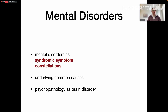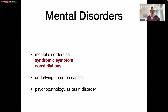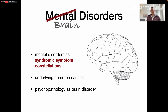What are mental disorders? The standard view in medicine is that mental disorders are basically constellations of specific syndromes — syndromic symptom constellations — and these symptoms are supposed to have a common cause, some kind of underlying glitch in the brain circuitry. If this is the case, then psychopathology is conceived of as a brain disorder. Mental disorders are really just brain disorders. This is one standard view that has been very common over the past few decades.